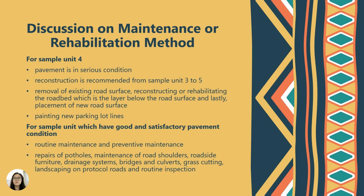For sample units with good and satisfactory pavement conditions, routine maintenance and preventive maintenance are required to maintain the road condition. This involves repairs of potholes, maintenance of road shoulders, roadside furniture, drainage systems, bridges and culverts, grass cutting, landscaping on portable roads, and routine inspection.